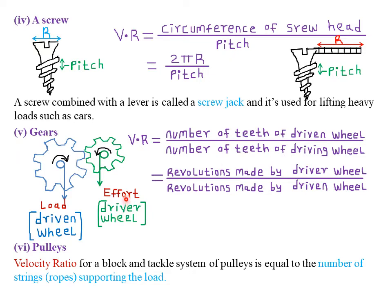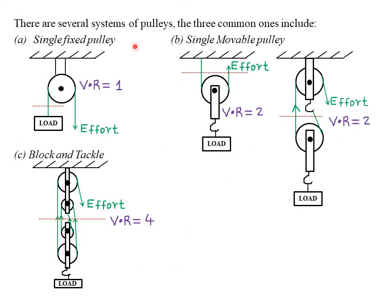The wheel on which we apply the effort is called the driver wheel or the driving wheel. The other simple machine is what we call the pulleys. For pulleys, the velocity ratio for a block and tackle system will always be equal to the number of ropes or strings supporting the load. There are three common systems of pulleys: the single fixed pulley, the single movable pulley, and the block and tackle pulley. For a single fixed pulley, the velocity ratio will always be equal to 1.